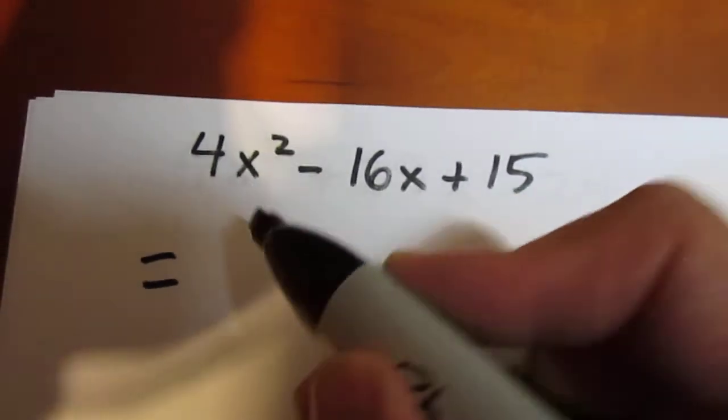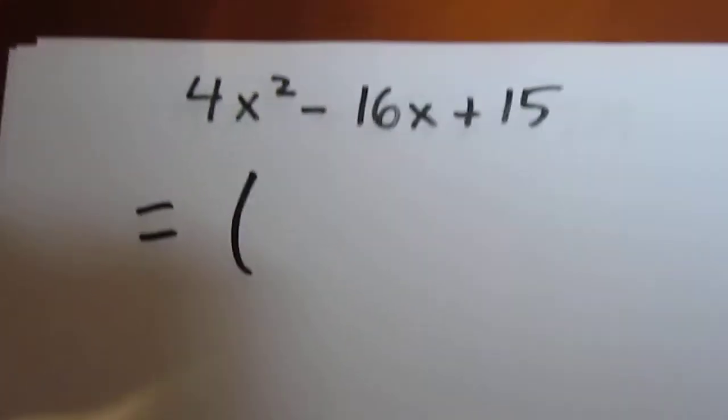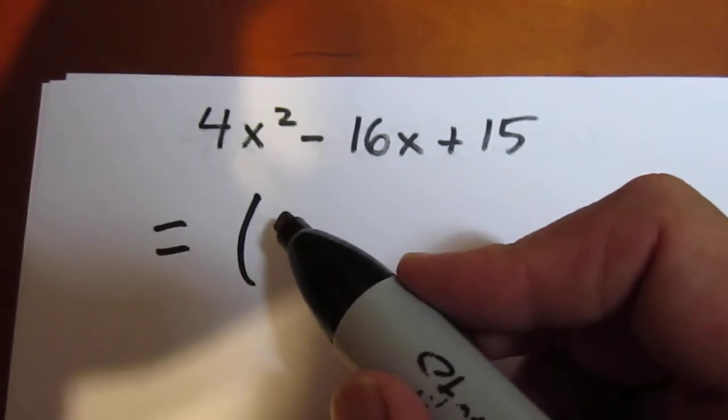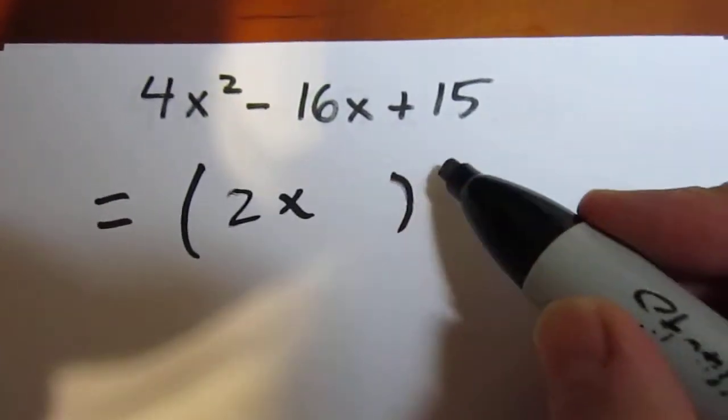I usually advise people to try the options that are closest together. So, I could call 4x squared 2x times 2x, or I could call it 4x times 1x. I'll probably try the 2x times 2x first.